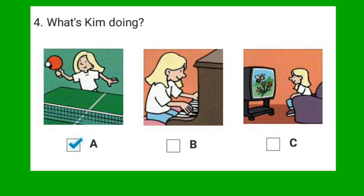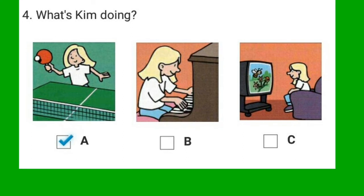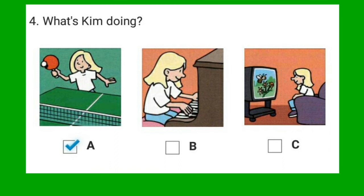4. What's Kim doing? Is Kim playing the piano? No, she isn't. She's playing table tennis. Is she playing with her brother? No, her brother's watching television. Kim's playing table tennis with a friend.